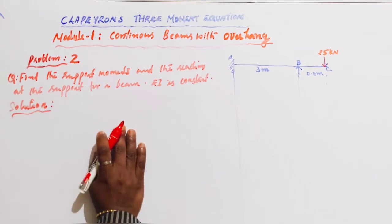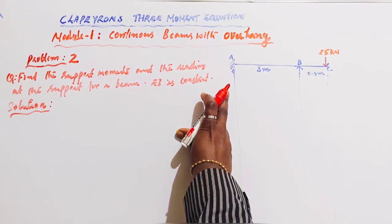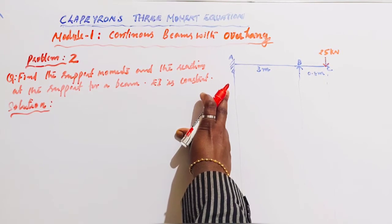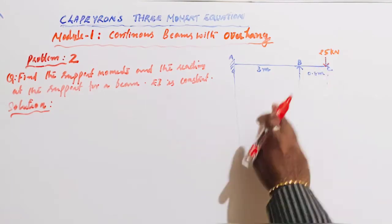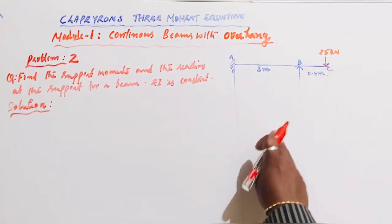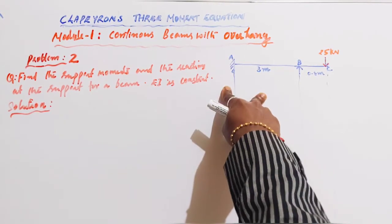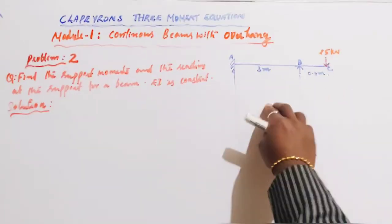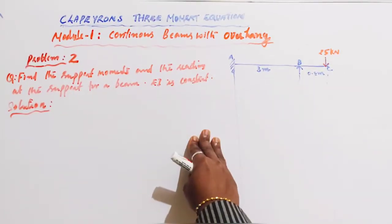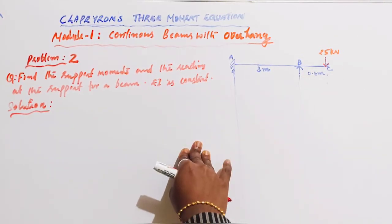Solution. A is a fixed end — fixed condition. Remember: introduce an imaginary zero span at A. For the overhang BC, convert the overhang moment. Two conditions apply here: A fixed — introduce an imaginary zero span; and BC overhang — convert moment.